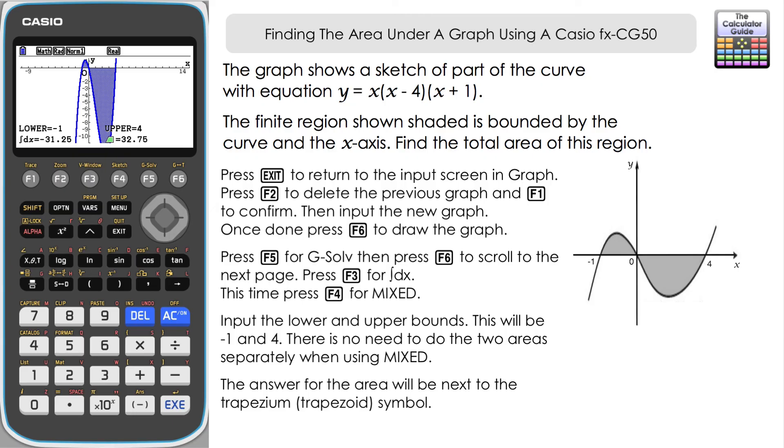And I think it's quite a good way of doing these mixed areas where you've got some above and below the x-axis, because if we're perhaps using the Run Matrix method we'd have to think about doing two separate calculations, one for between minus 1 and 0, one for between 0 and 4, and then adding the absolute value of those two together to get the total area. Here the calculator has kind of done it in one go for us, so very useful for these mixed areas.